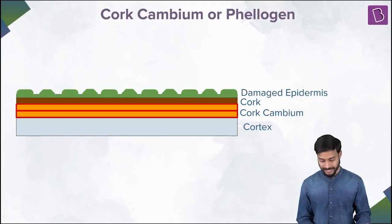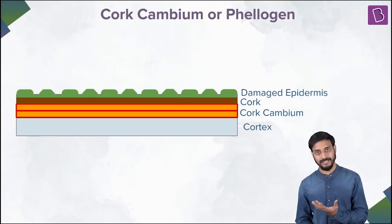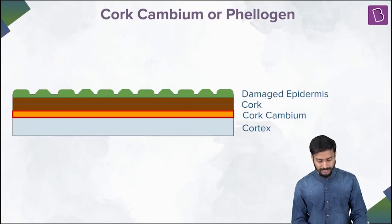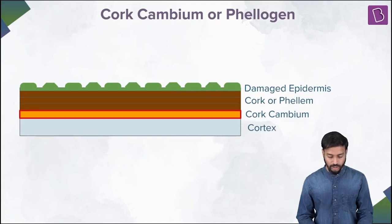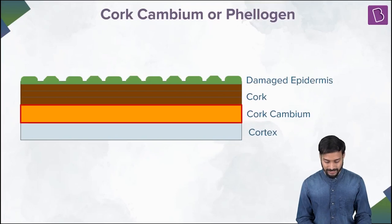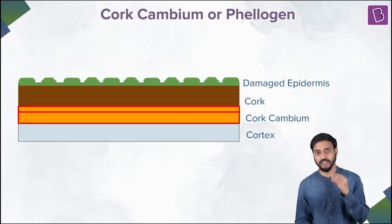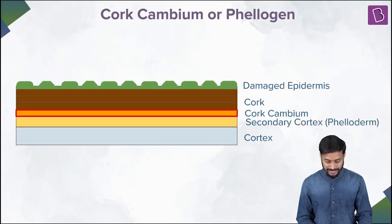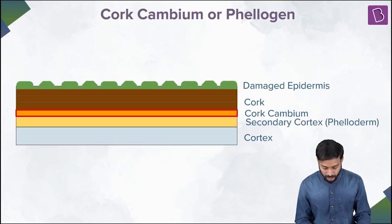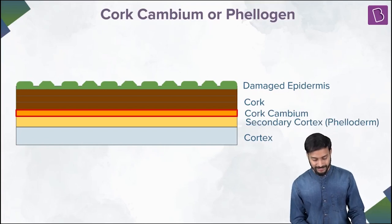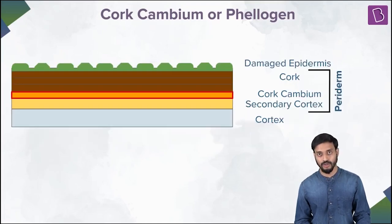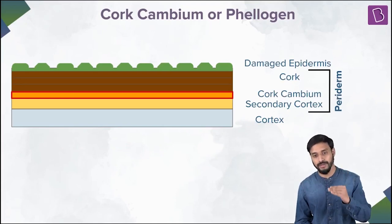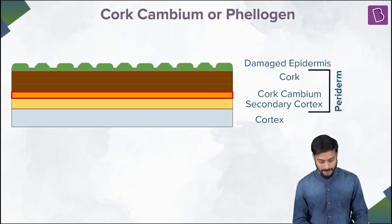The secondary cortex consists of parenchymatous cells. The cork, the cork cambium, and the secondary cortex together are known as the periderm.